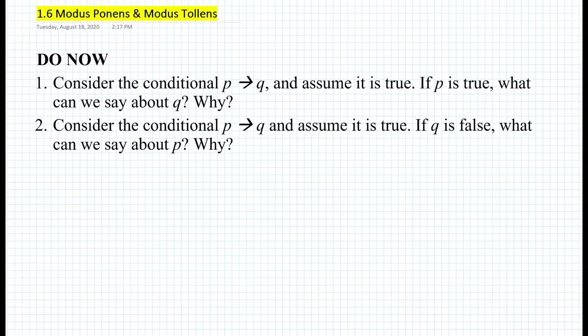For number one, consider the conditional statement if P then Q, and let's assume that that conditional statement is true. If P is true, what can we say about Q and why? And for number two, consider the conditional statement if P then Q, and assume that conditional statement is true. Now, if Q is false, what can we say about P and why? So let's get started with number one.